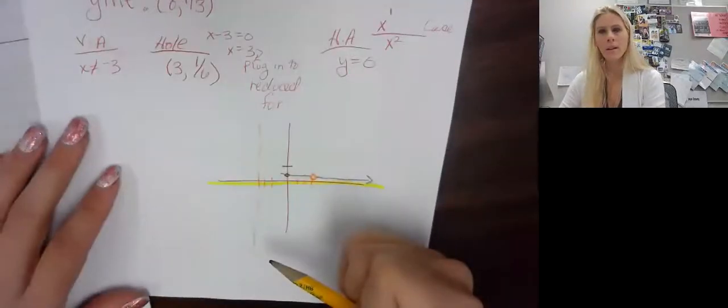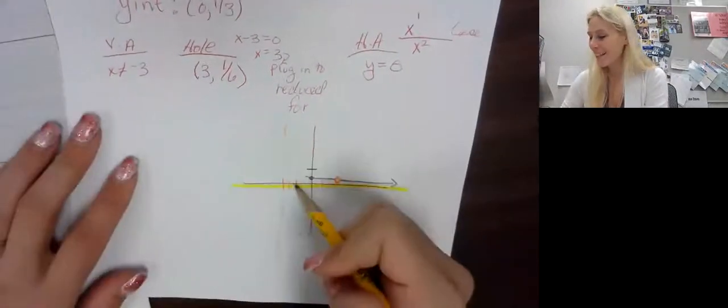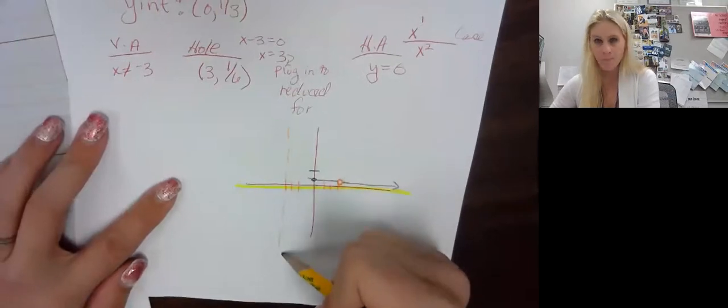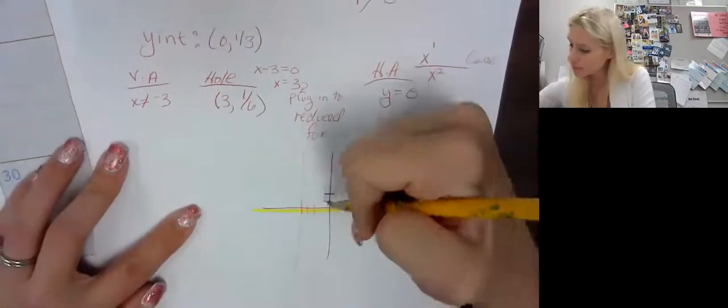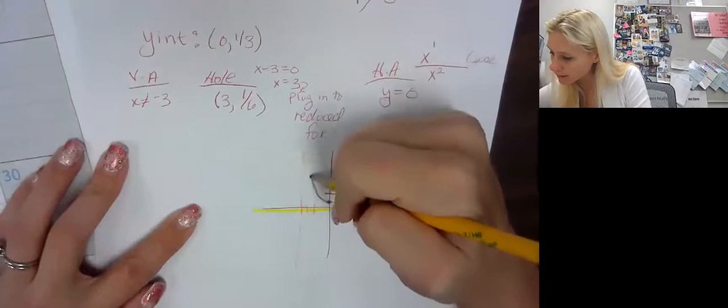How do I know it doesn't go down? Because there's no x-intercept, right? If there was an x-intercept, it would come down here. But there's no x-intercept, so our only assumption is it goes up here.